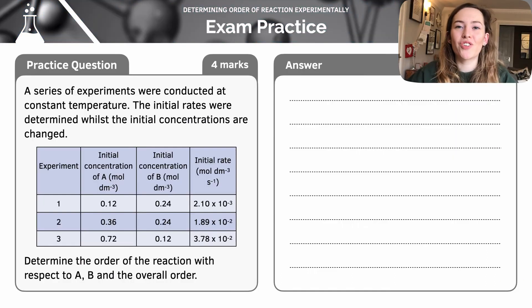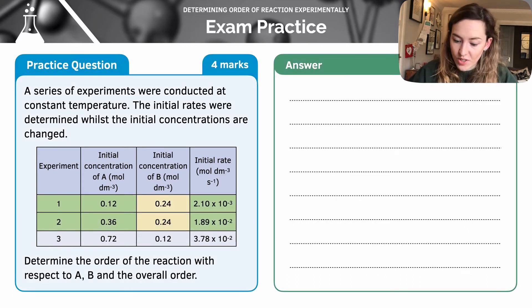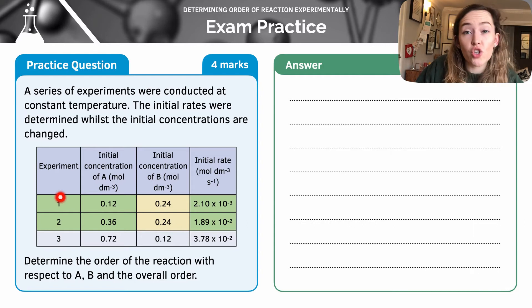Here's a practice question to have a go at. Pause the video and give it a go. Using this data, the first thing I'm going to do is to identify two experiments where one of the reactants is kept constant, the concentration. I can see here that the concentration of B for experiments one and two has been kept the same. So that's great.